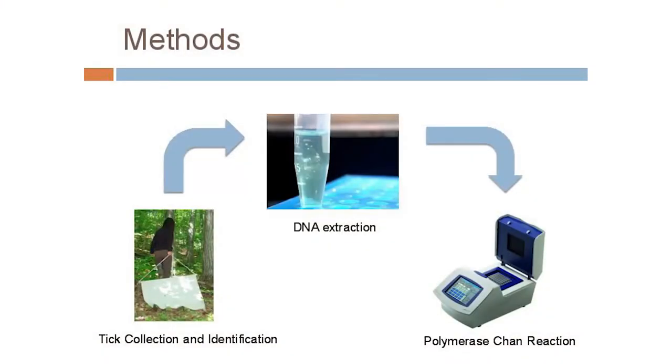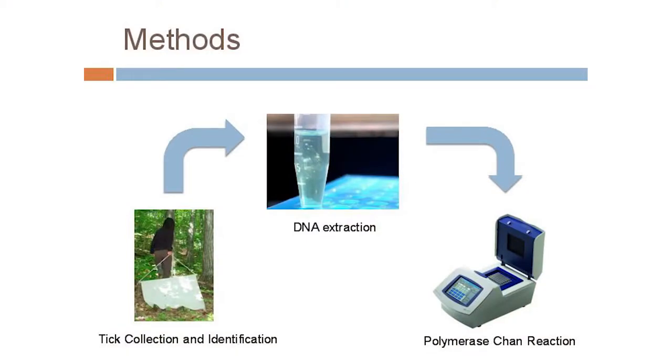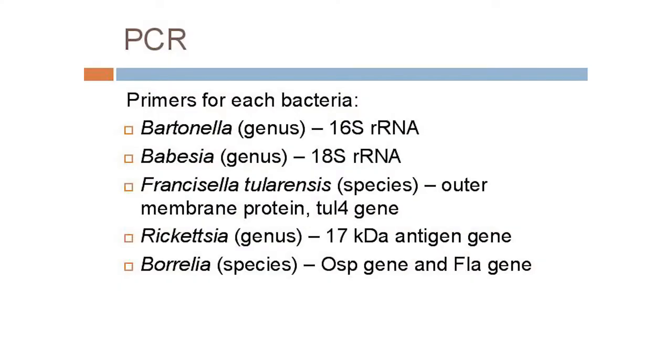Once we have our ticks collected, we bring them into the lab and perform a DNA extraction — we crush up the ticks, and the extraction sucks out all the DNA from the sample, including DNA from the pathogen. Using that DNA, we can test for the presence of the pathogen. We use a technique called polymerase chain reaction (PCR), which tests for a specific piece of DNA using specific primers that we buy. I put up a slide of the different primers we use, but we'd be here much longer if I went through all of them.